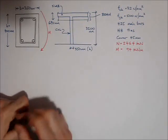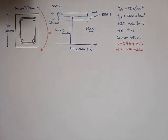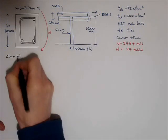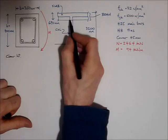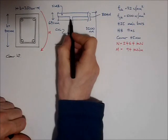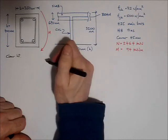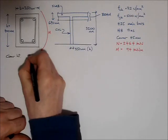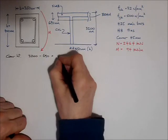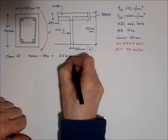So the first thing I want to do is calculate the clear height of the column, because I make use of that a little later on in the calculations. So the clear height of the column is simply the distance above one beam or slab to the next beam or slab. For us it's 3,200 minus 690, which is 2510 millimetres.